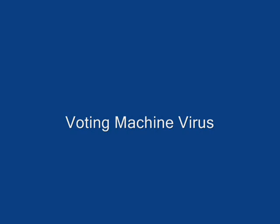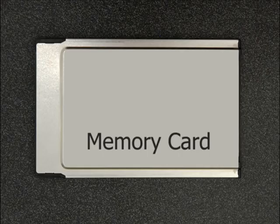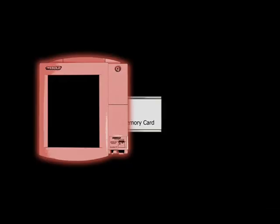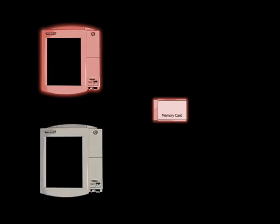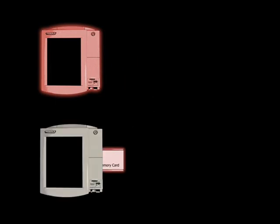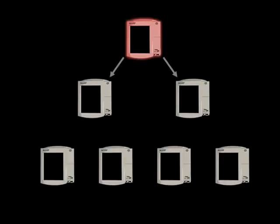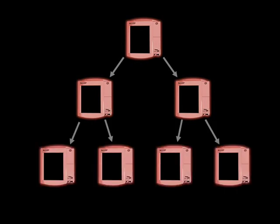Due to design flaws in the Diebold AccuVote TS voting machine, it is possible to construct a computer virus that infects these machines and spreads automatically from one machine to many others. To illustrate this, we have constructed a demonstration virus in our lab. The machines use removable memory cards to distribute software updates and store the results of elections — the memory cards function similarly to floppy disks or thumb drives on ordinary PCs. Memory cards act as carriers for the virus. When a memory card is inserted into an infected machine, the machine copies the virus onto that memory card. If the memory card is removed and later put into another machine, the virus spreads from the memory card to the new machine. In this way, the virus can spread from one infected machine to an entire population of machines.